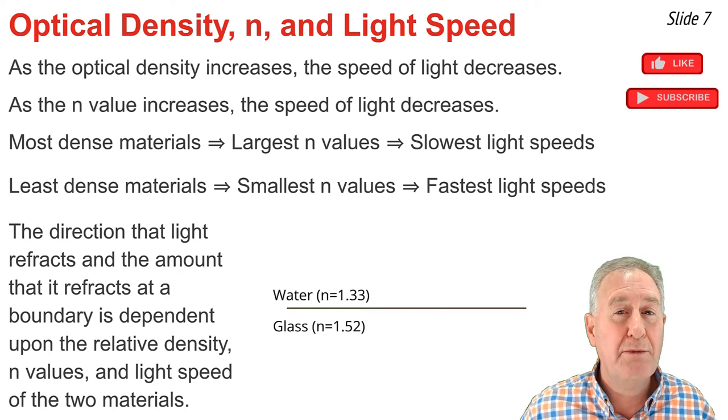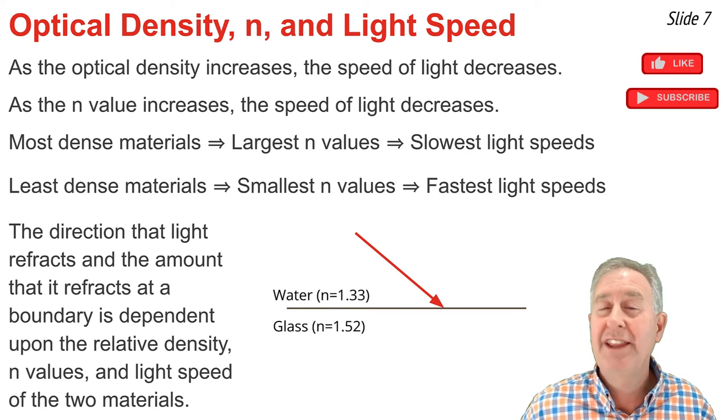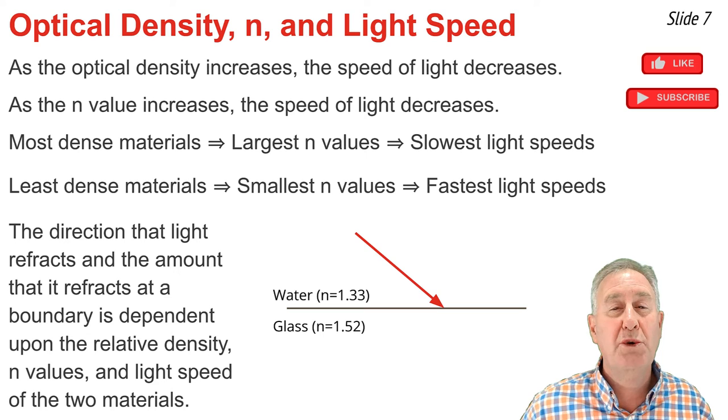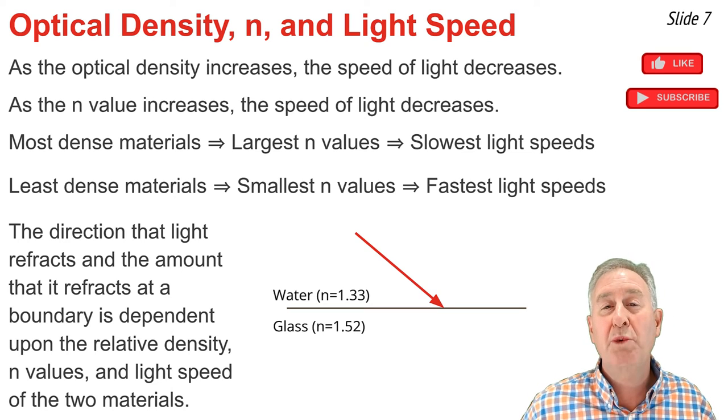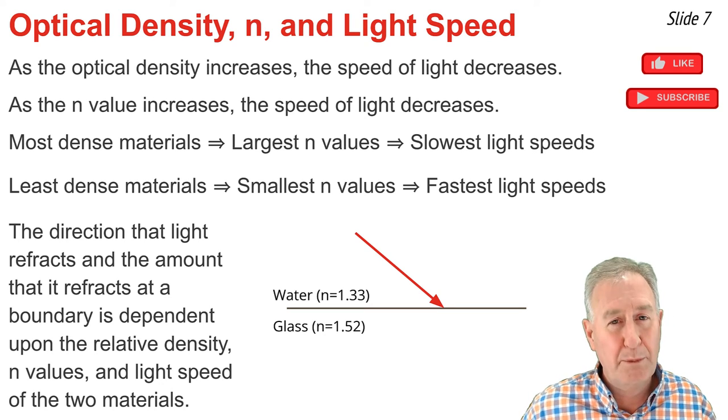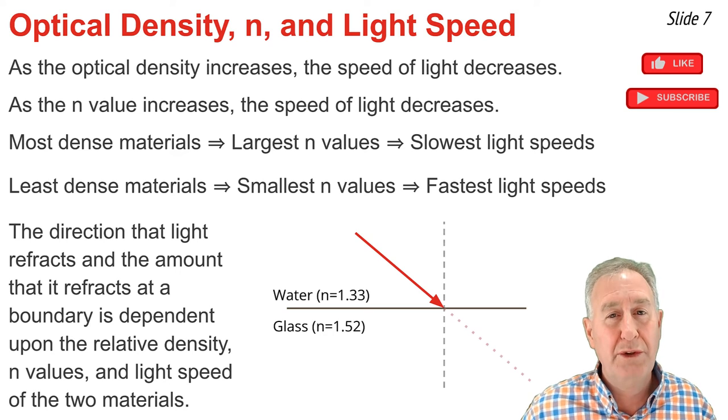For example, let's consider a light ray passing from water into glass. The index of refraction of glass is greater than that of water, so when light crosses the boundary from water to glass, it will slow down.